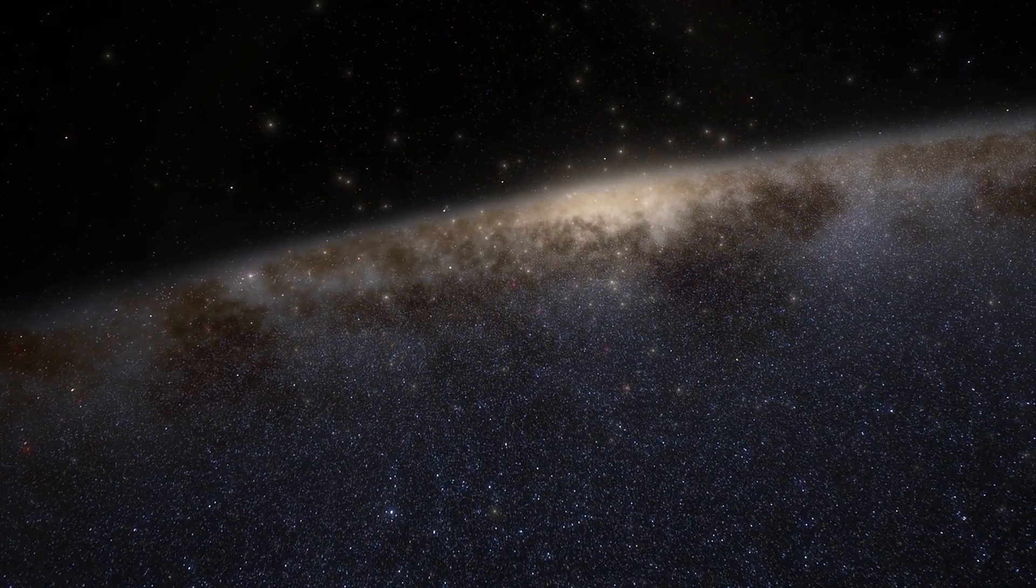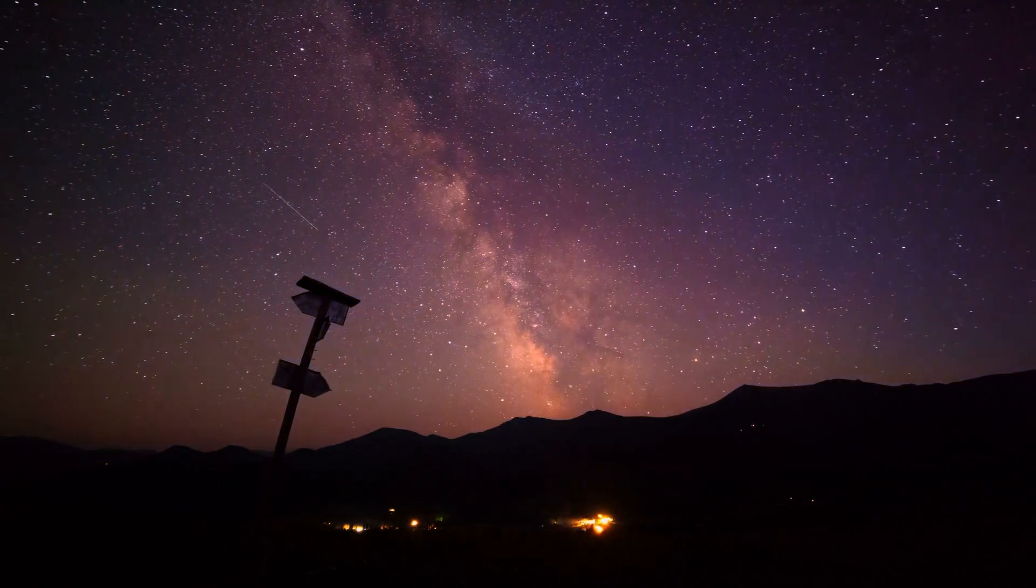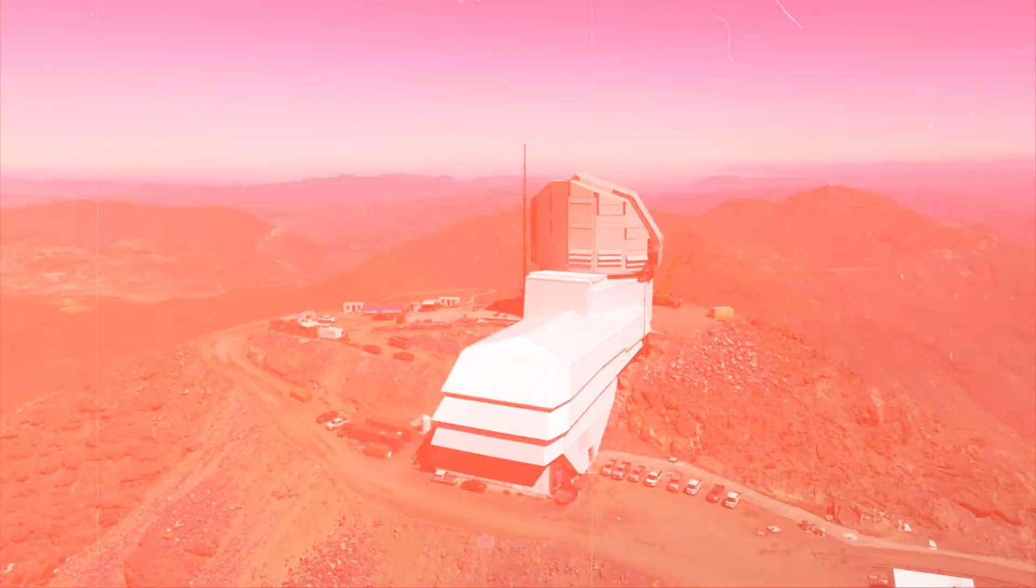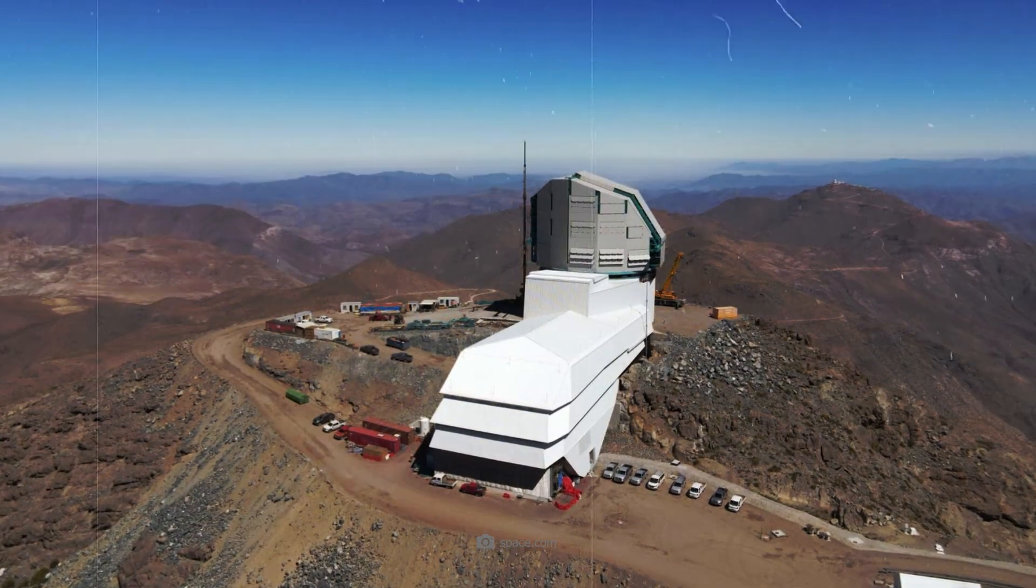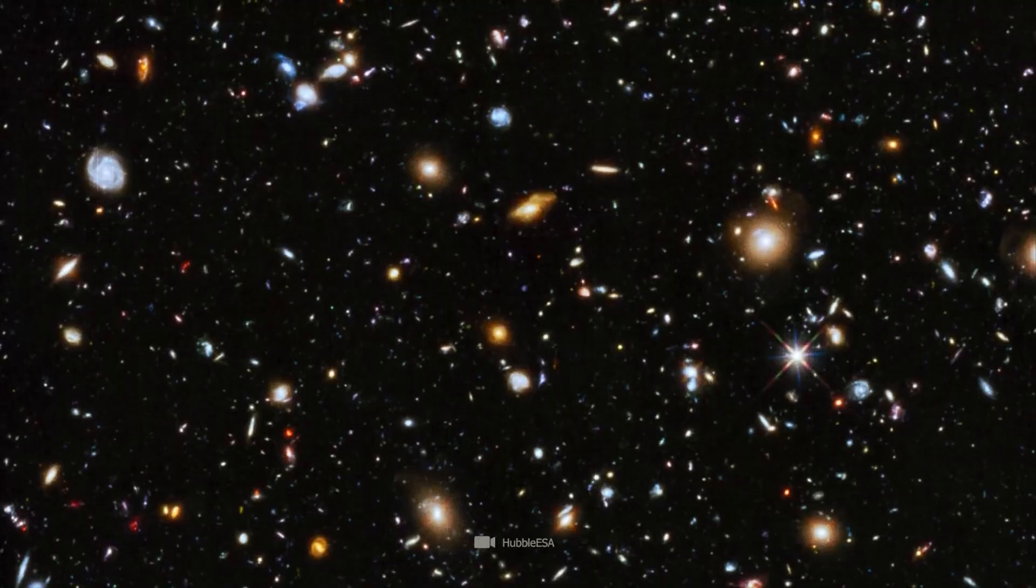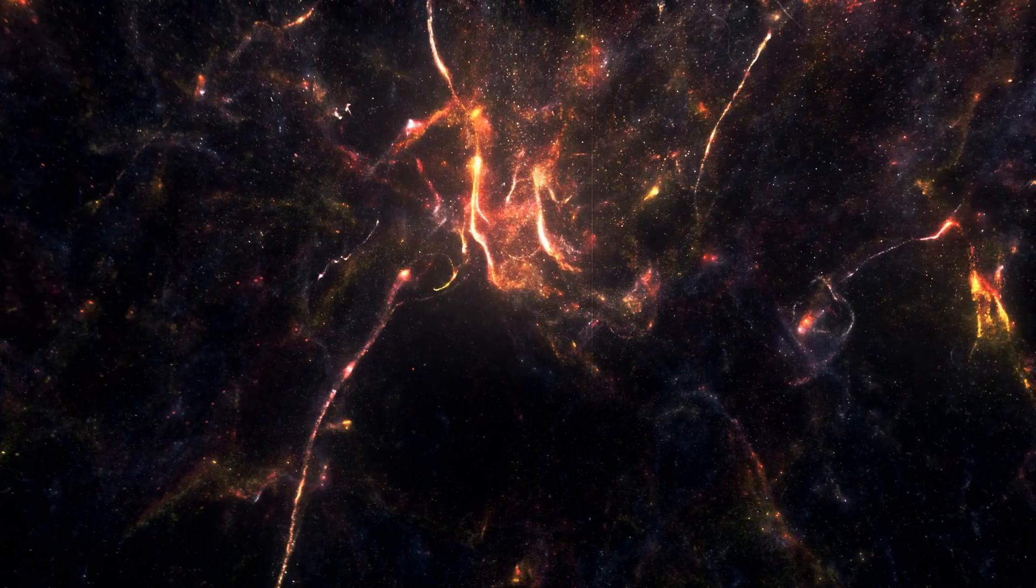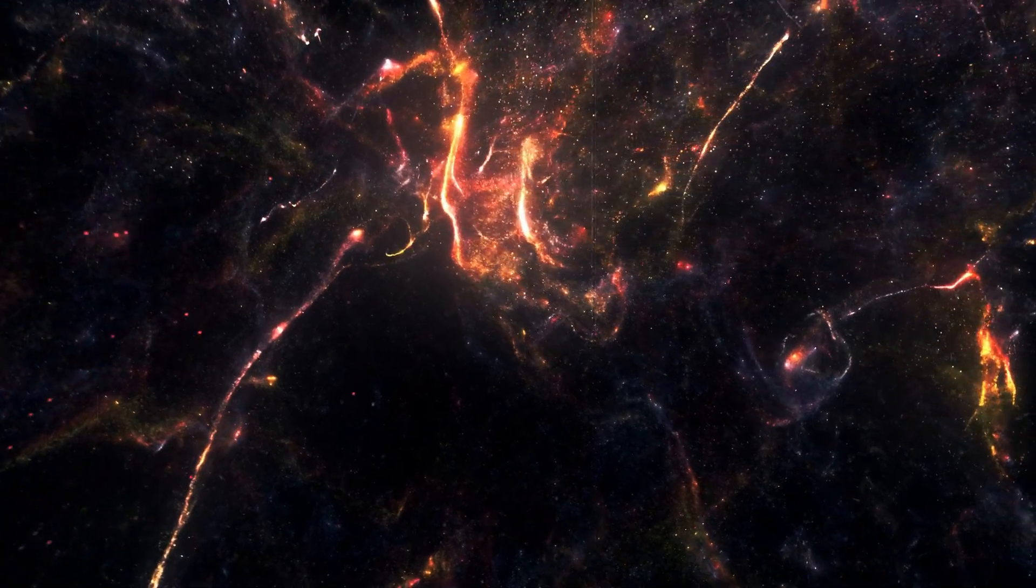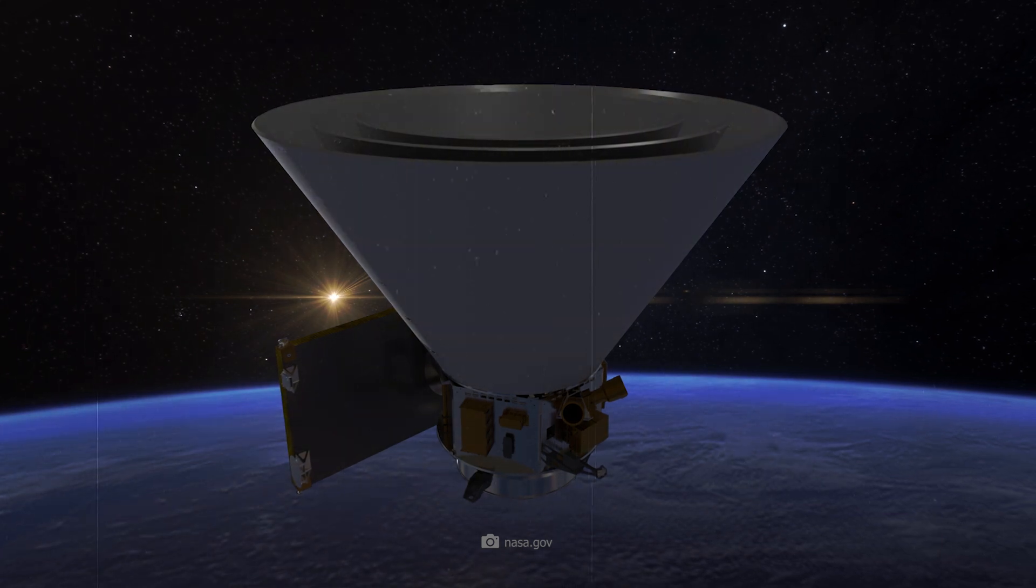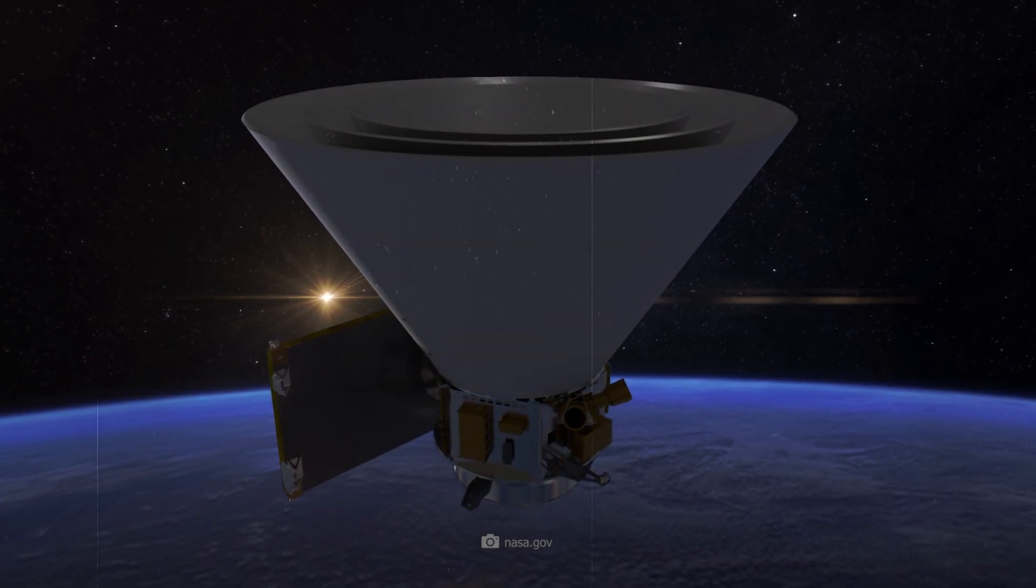The Vera C. Rubin Observatory will specifically search for gravitational lenses. These are basically all extremely large objects in the universe that act like magnifying glasses due to their gravity. The telescope will be located on the 2,682-meter-high El Pignon Peak in northern Chile. In 2024, NASA's SPHERE-X mission will map the entire sky in a broad spectrum of colors, exploring the history of the universe once again. By collecting data on cosmic backgrounds, SPHERE-X could make important contributions to solving the current crisis in cosmology.